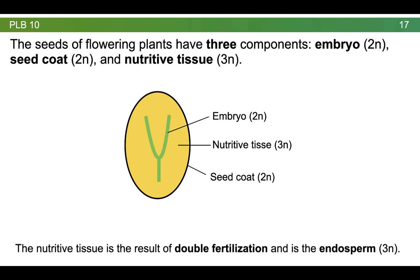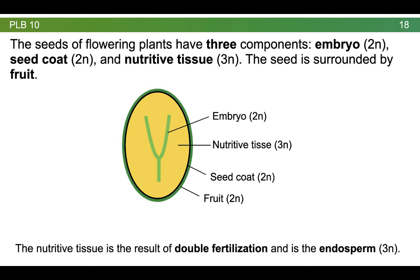The seeds of flowering plants have three components. They have an embryo, which is diploid, a seed coat, which is diploid, and nutritive tissue, which is triploid. Remember that the nutritive tissue is the result of double fertilization and ends up developing into the triploid endosperm. The whole structure is surrounded by the ripened ovary, which is the fruit.